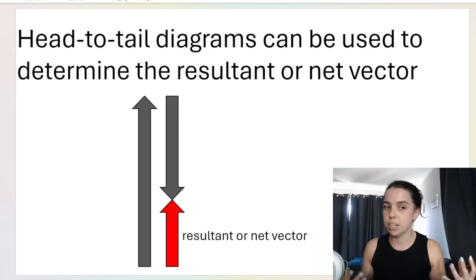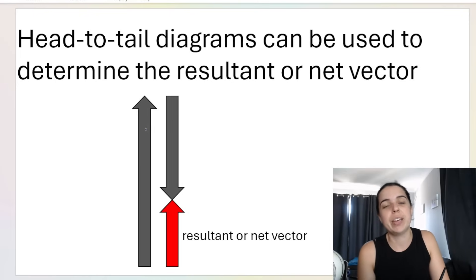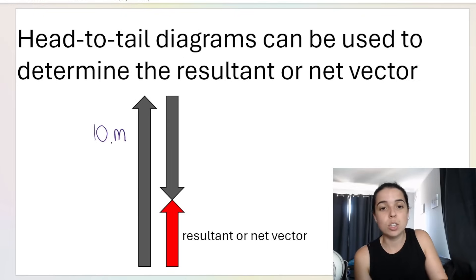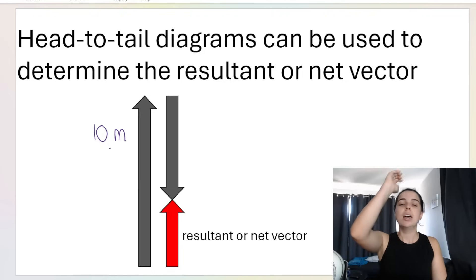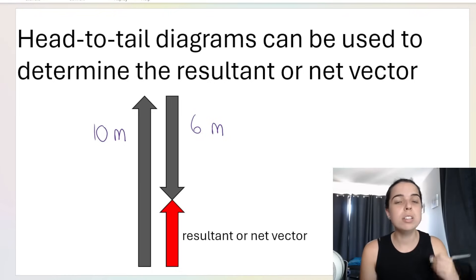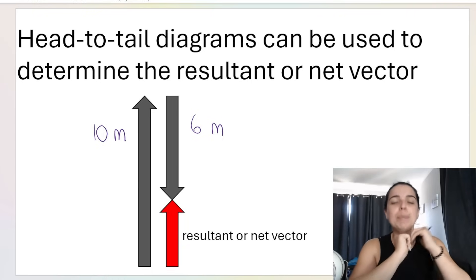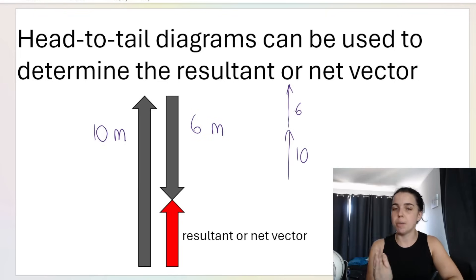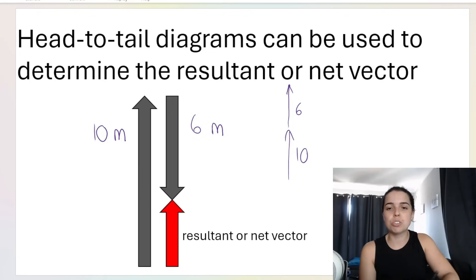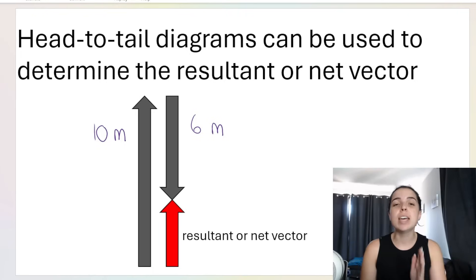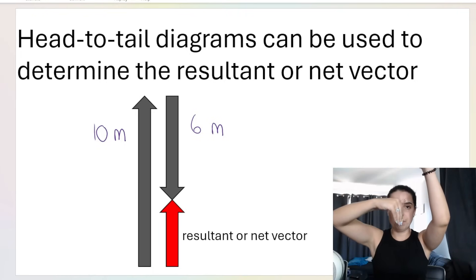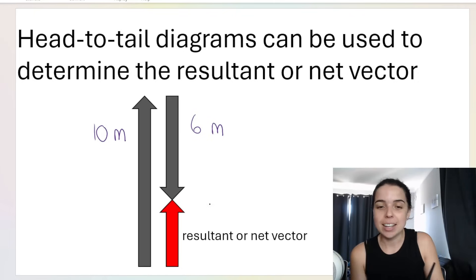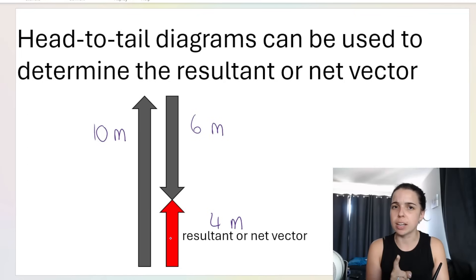Here's another example. Say someone walks 10 meters north and then 6 meters south. What is the displacement — the resultant vector? I don't add 10 and 6 because they're going in opposite directions. We subtract them: 10 minus 6 gives you 4 meters. And which way is the resultant arrow pointing? It's pointing north.